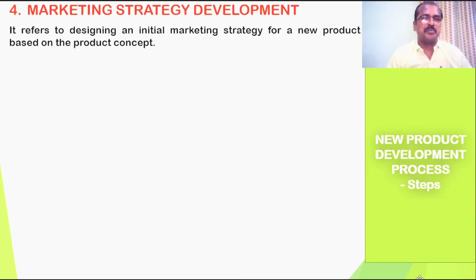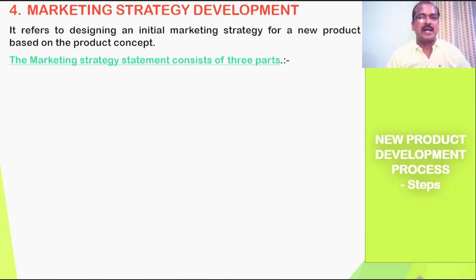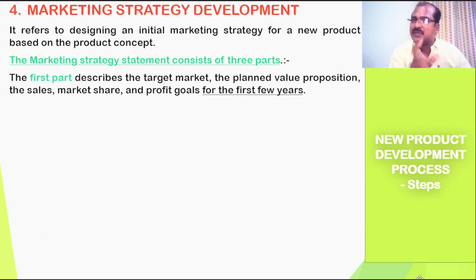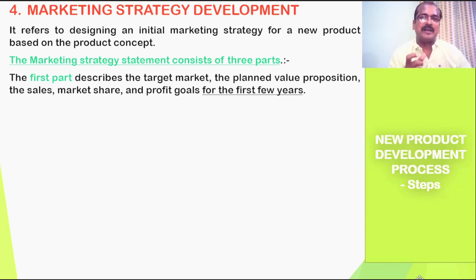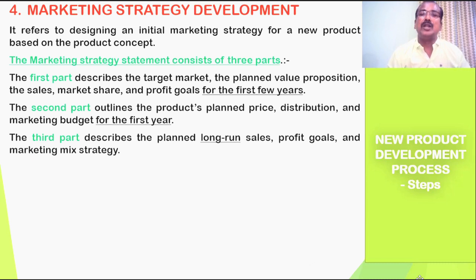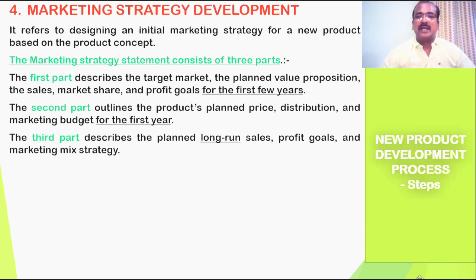The fourth step is marketing strategy development — designing an initial marketing strategy for a new product based on the product concept. The strategy statement consists of three parts: the first describes the target market, the value proposition, and sales, market share, and profit goals for the first few years. The second outlines the product's price, distribution, and marketing budget for the first year. The third describes the long-term sales and cost-volume-profit analysis.